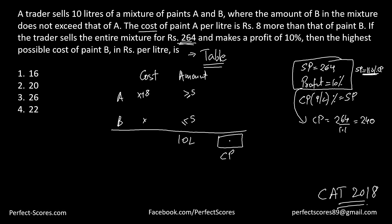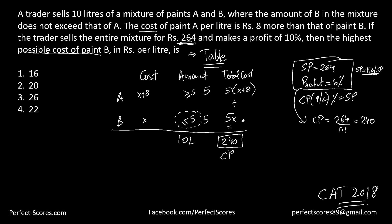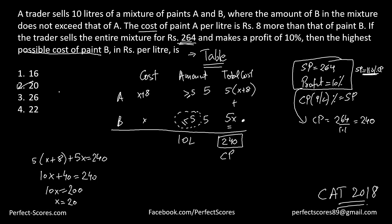The total cost price is 240. The question asks for the highest possible cost for paint B. To maximize the total cost we pick the highest possible amount for B, which is 5 liters, making A also 5 liters. So the cost contribution from B is 5x and from A is 5 times (x plus 8). Setting up the equation: 5(x+8) + 5x = 240, which gives 10x + 40 = 240, so 10x = 200, meaning x = 20. That is your answer.